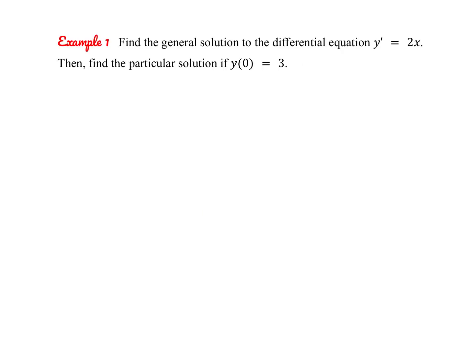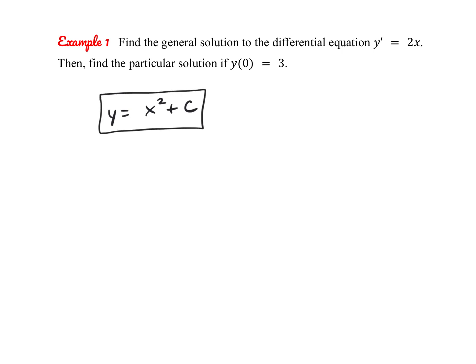Let's try one together. We're going to find the general solution to the differential equation y prime equals 2x, and then find the particular solution if y of 0 equals 3. The way you undo a derivative is by taking the integral, so we're finding the general antiderivative. The antiderivative of 2x is x squared plus c — this is our general solution.